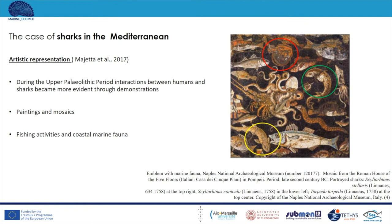During the Upper Paleolithic period, interactions between humans and sharks became more evident through artistic depictions. Our main sources are paintings and mosaics depicting fishing activities and coastal marine megafauna. In a Roman mosaic on the right, many fish and marine animals are depicted, including three shark species: Torpedo torpedo in the red circle, Cephaloscyllium (Ciliorinus) tellaris in the green circle, and Scyliorhinus (Ciliorinus) canicula in the yellow circle. These depictions prove the importance of marine species for coastal communities and the significant interaction between human activities and marine ecosystems.